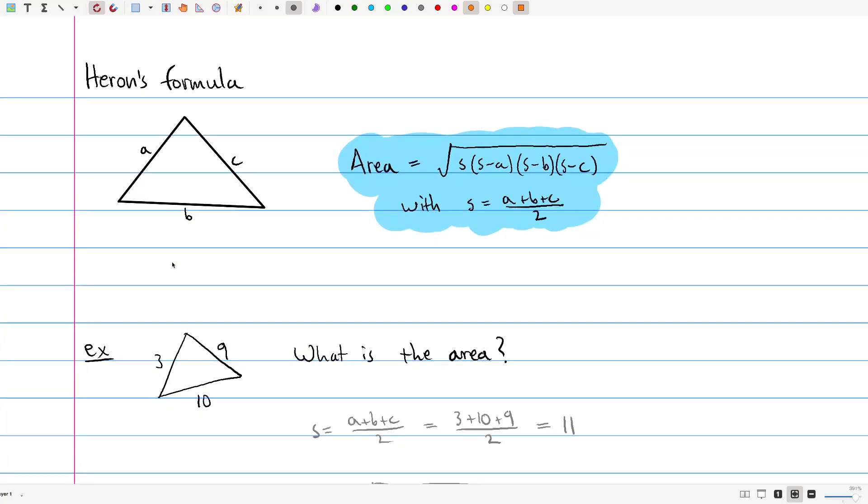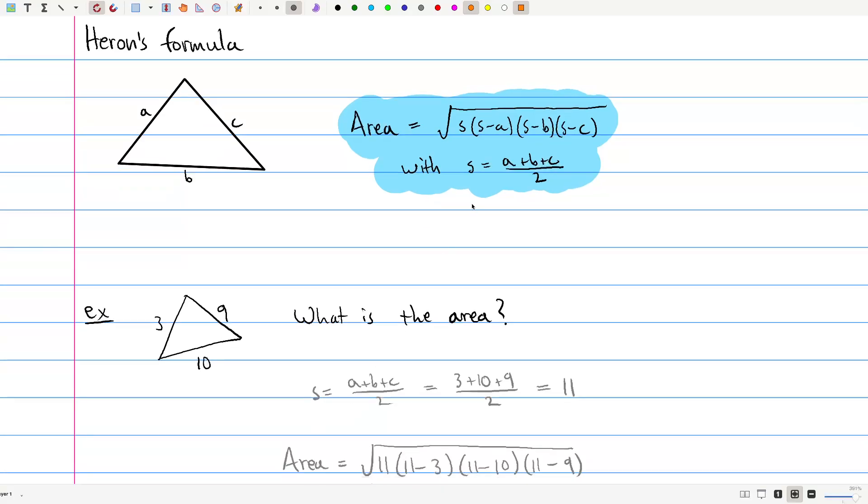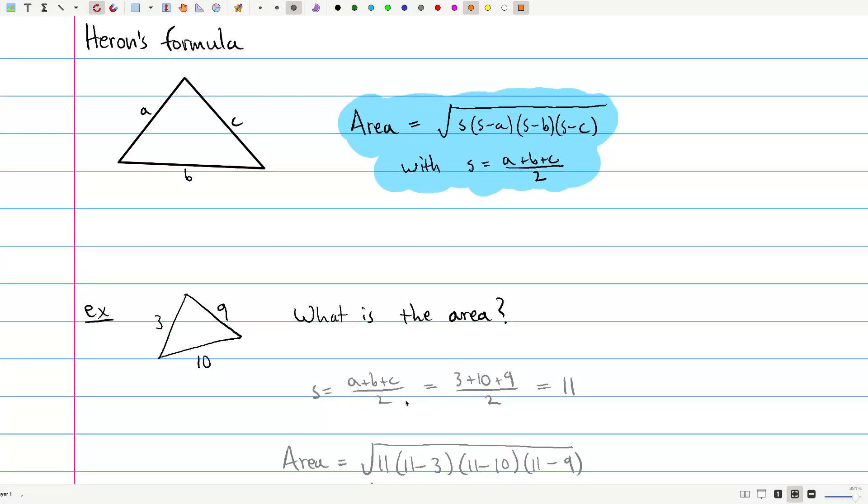So let's start off with an example with concrete numbers. Here is a triangle with 3, 10, and 9 as the side lengths, and we want to know the area. So first, we need to calculate S. That's A plus B plus C over 2, so 3 plus 9 plus 10 is 22, divided by 2 is 11, so that's our S value.